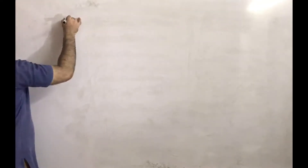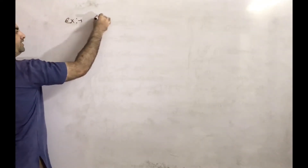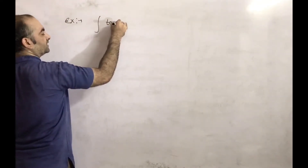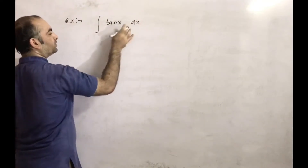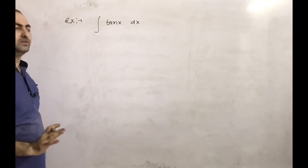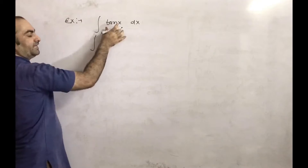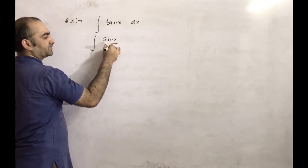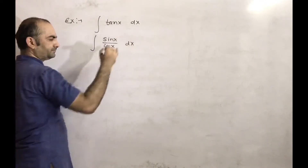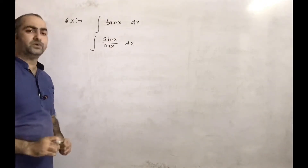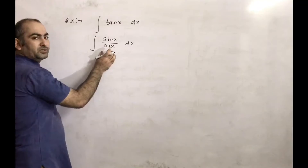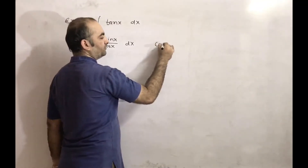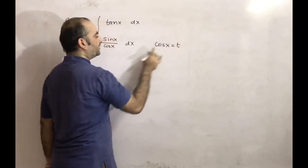Next we are discussing the application of the substitution method. The first example is integration of tan x dx. We don't know the direct integration of tan x, so we write it as sin x divided by cos x into dx. Now, instead of cos x we will put t, and everything has to be converted in terms of t.